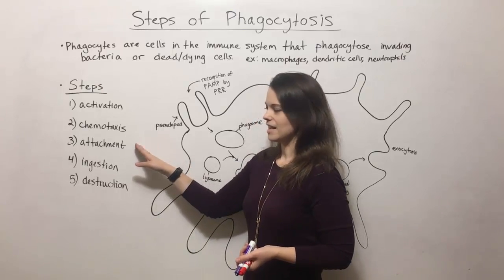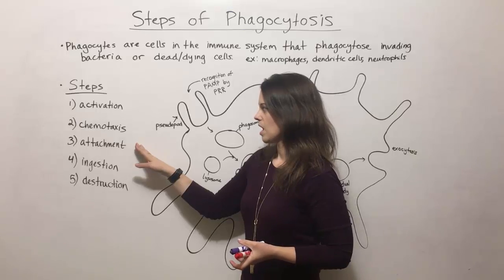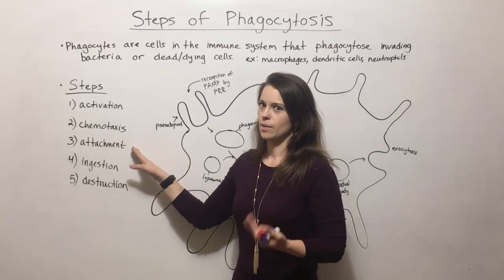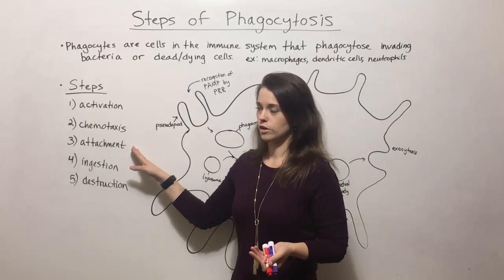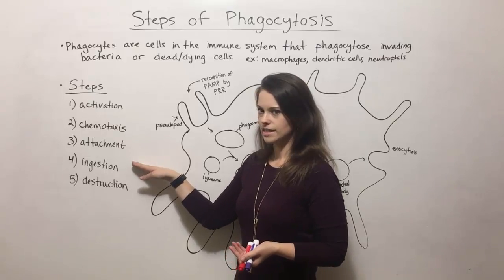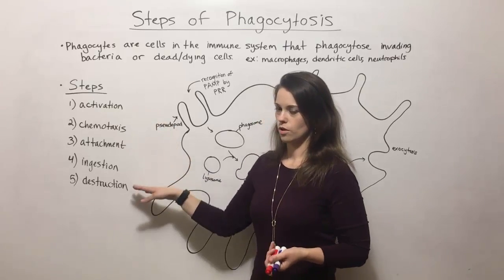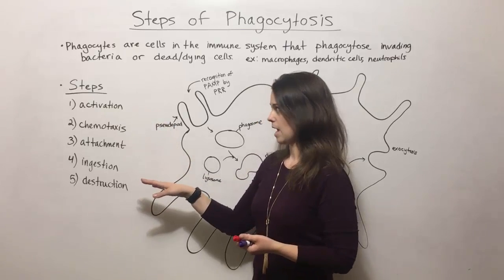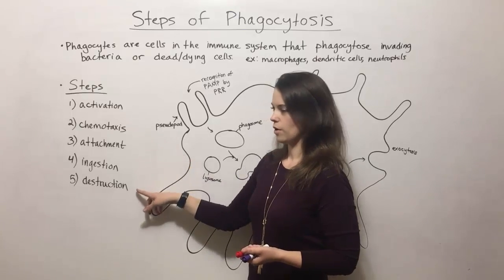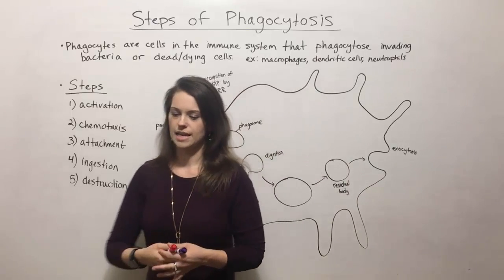Once it gets there, it attaches to the cell. As long as it recognizes it as something it is supposed to engulf and destroy, then it will ingest it and destroy it. So those are the five basic steps. We're going to look at steps three, four, and five in a bit more detail now.